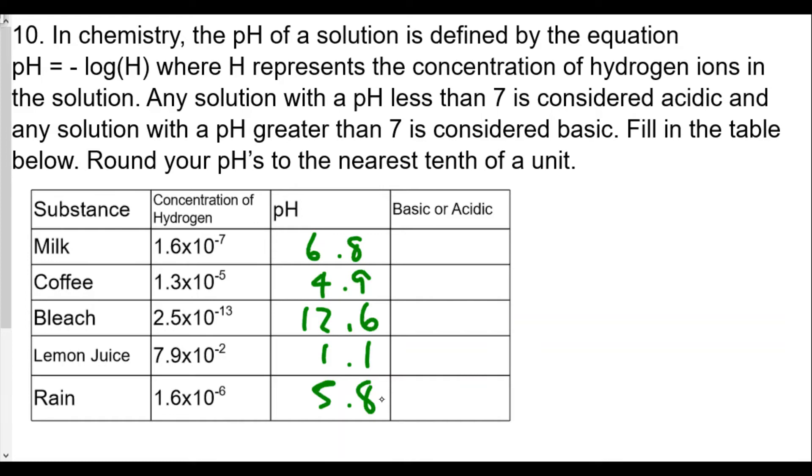So we see here that again, any pH less than 7 is considered acidic. So milk is slightly acidic, that's less than 7. Definitely coffee would be acidic. Greater than 7 would be basic, so this would be a base. And lemon juice, 1.1, very acidic. And 5.8, that's acidic as well. One might think it's acid rain.